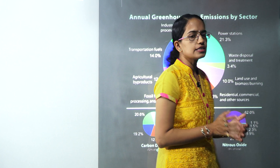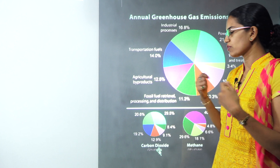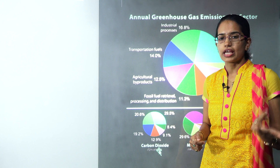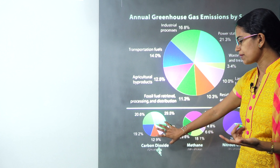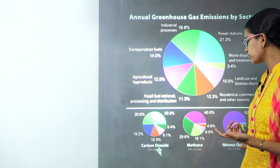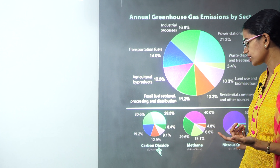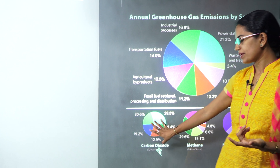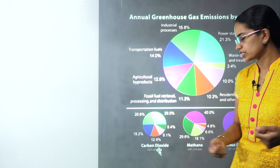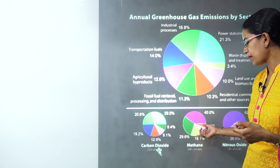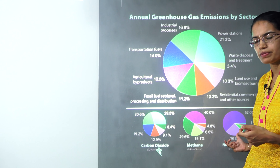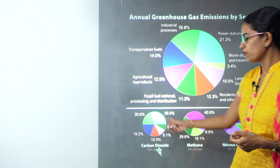The second thing is the highest proportion in terms of gases which lead to greenhouse gas emission. The highest is carbon dioxide followed by methane, followed by nitrous oxide. Carbon dioxide constitutes the highest percent, nearly 72%, followed by methane at 18% and nitrous oxide at 9%.